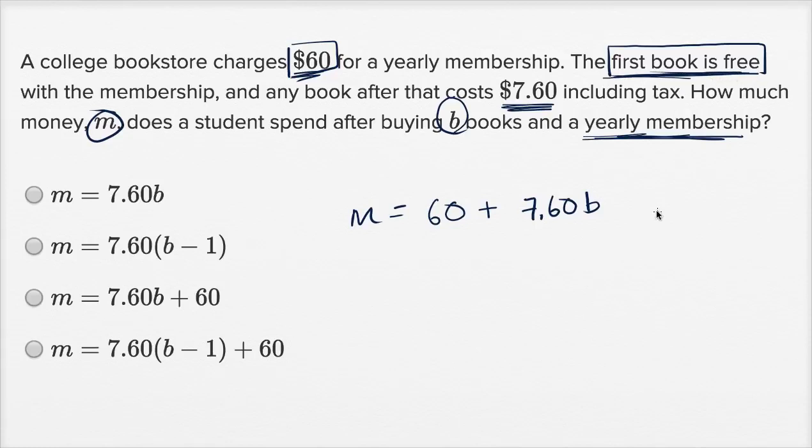The first book is free. So if you buy one book, you're not going to pay $7.60. You're gonna pay nothing. If you buy two books, you're not going to pay $14.20. You're only gonna pay $7.60. So you're only going to pay for one less than the number of books you buy.